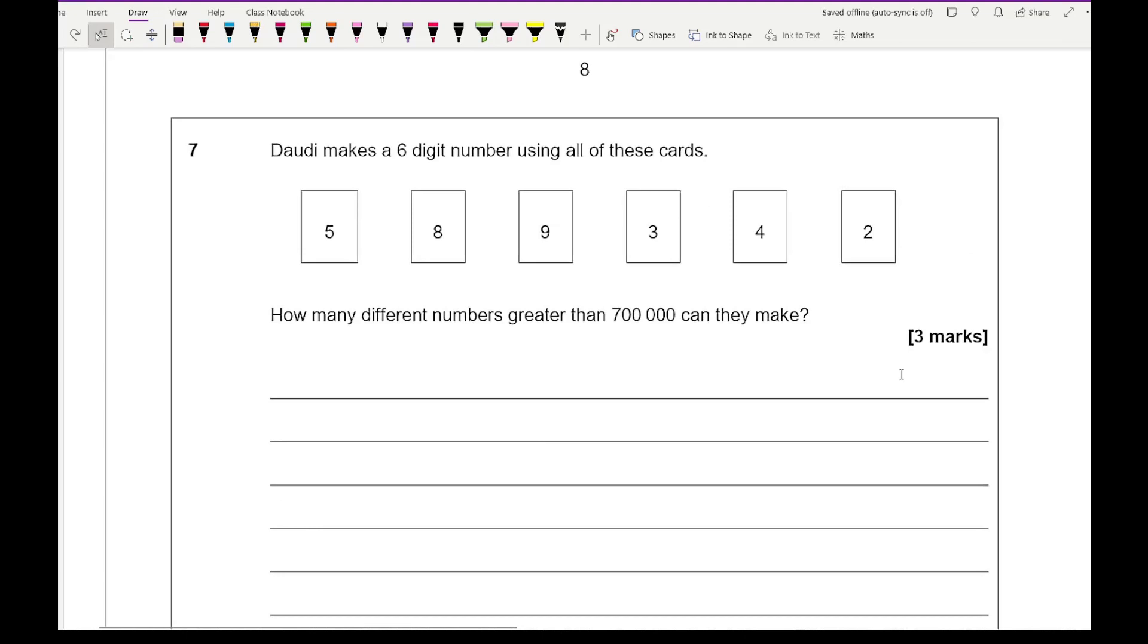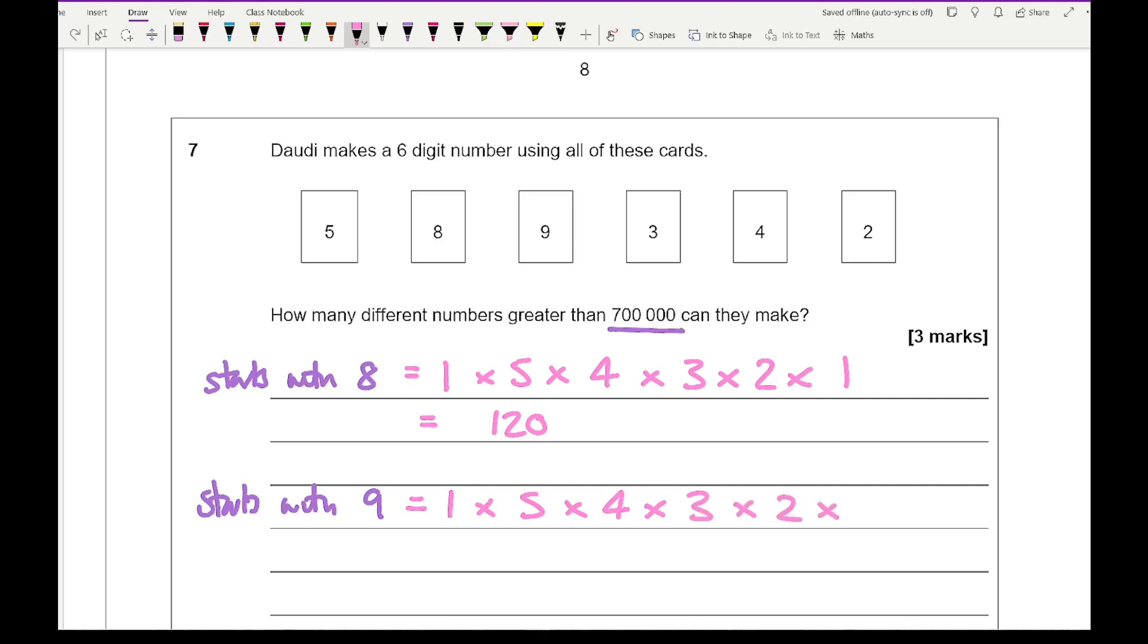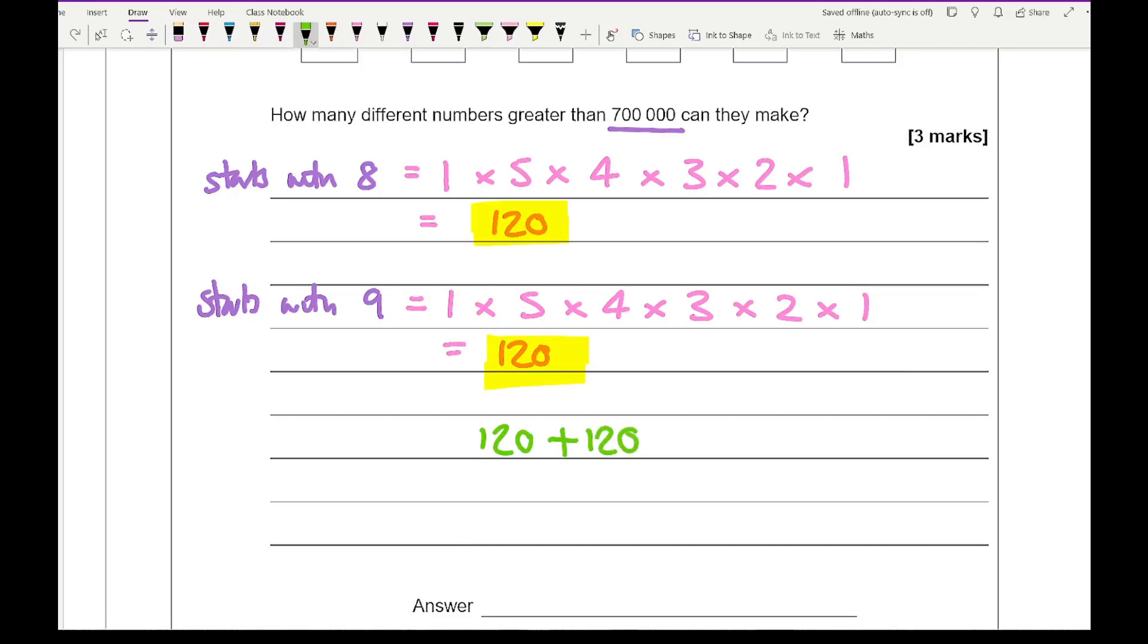Moving on to question 7, it says Dowdy makes a six digit number using all of these cards. How many different numbers greater than 700,000 can they make? So for this, well in order for it to be greater than 700,000, it either needs to start with an 8 or starts with a 9. Now if it starts with an 8, there's only one possible number that can be, so that's one. Then the next number there are five numbers to choose from. In the third number there are four numbers to choose from. Then there's three. Then there's two and then there's one. And if I work that out I get an answer of 120. Then for starting with a 9, there's only one number to choose from. Then there's five numbers for the second one. Four numbers for the third one. Three numbers for the fourth. Two numbers to choose from for the fifth one. One number for the last one. And that again gives me 120. So all I then need to do is just simply add those two numbers up. So I get 120 plus 120, which is 240.